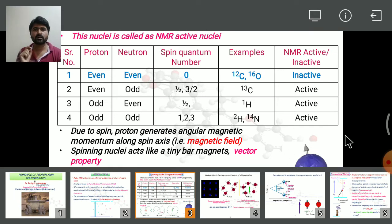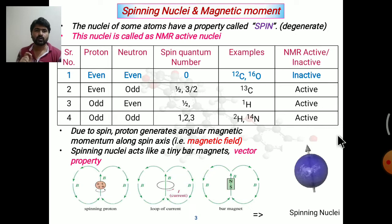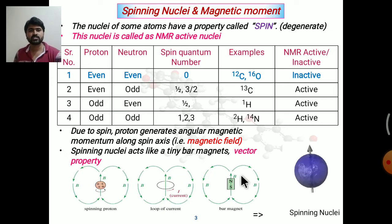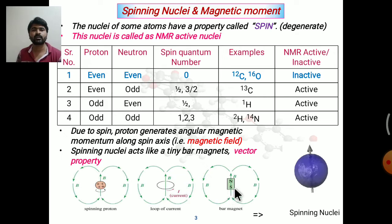According to classical electromagnetics, if a charged particle rotates, it generates a magnetic field. Since nuclei have the property of spin and rotate around their own axis, there is also a generation of a magnetic field. The spinning nucleus generates a loop of current, and due to this loop of current, a magnetic field is generated. Such a spinning nucleus behaves like a tiny bar magnet having a proper magnetic moment vector, showing a north and south pole.